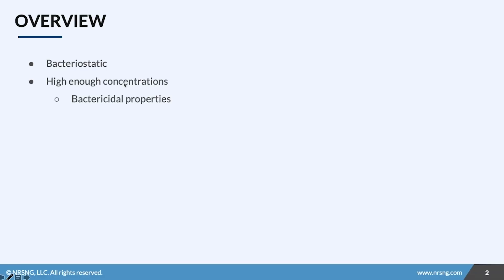Hey guys, welcome. Today we're going to go over the antibiotic class macrolides. Macrolides are either bacteriostatic or bactericidal — static meaning that they suppress bacterial growth, or cidal meaning that they kill the bacteria. With macrolides, this is achieved at high concentrations.